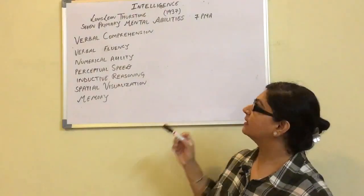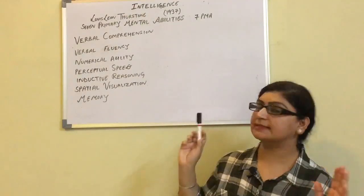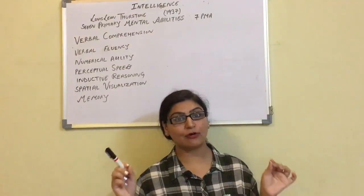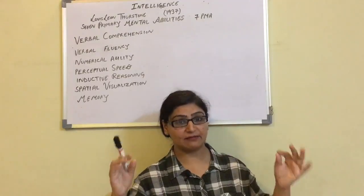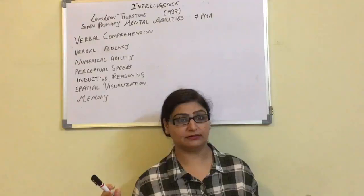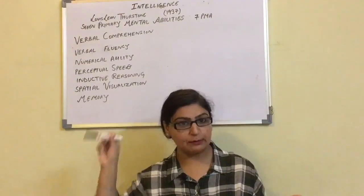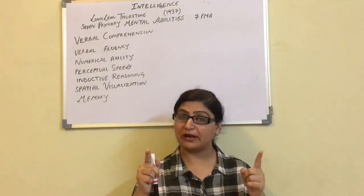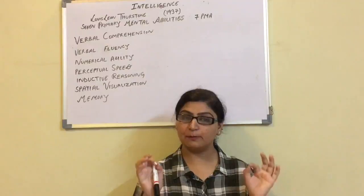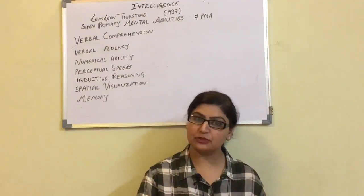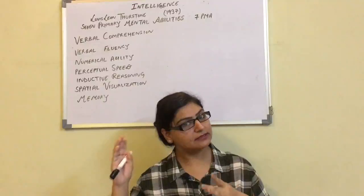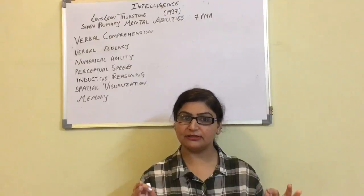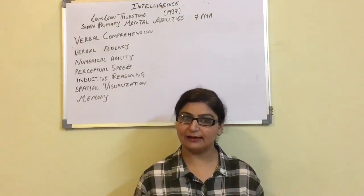This is Thurston's Seven Primary Mental Abilities theory. For him, intelligence is a cluster of abilities, and the seven primary factors are independent of each other. Please remember these seven abilities — they are very important and practical. Stay tuned to this channel, as important exam questions related to Spearman's two-factor theory and Thurston's theory will be covered. Thank you very much, all the best, and bye-bye.